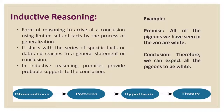In inductive reasoning, the premises provide support to the conclusion, but the truth of the premises does not guarantee the truth of the conclusion. Here is an example: the premise is all the pigeons we have seen in the zoo are white, so we come to a conclusion that therefore we can expect all pigeons to be white. The pattern recognition process goes: first it has to be observed, that observation is converted into patterns, then into a hypothesis, and the last conclusion we call a theory.